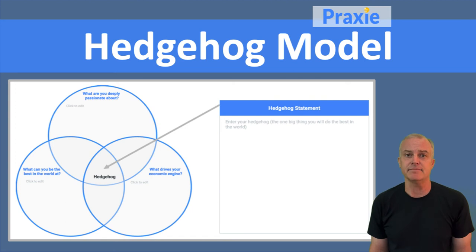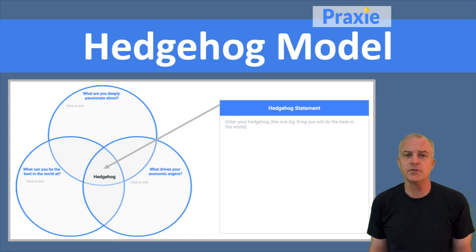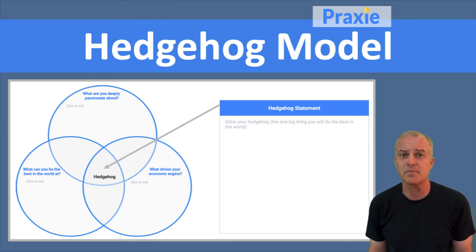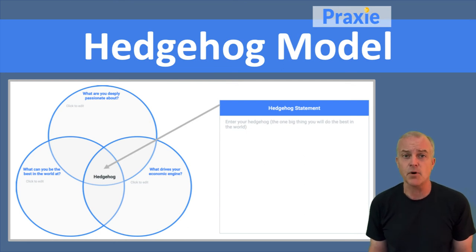How do you get to that answer? Well, there are a few different things you could look at. You can look at what you're most passionate about — things you care about — because you're not going to be the best in the world at something that you don't care about. So the passion element is important.